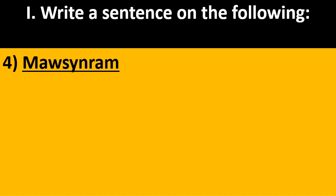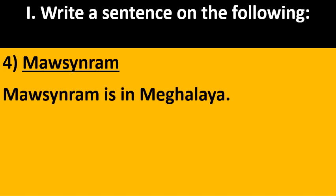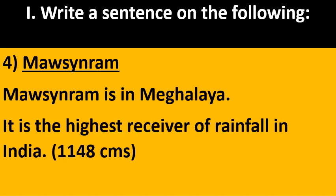Mawsynram. Mawsynram is in Meghalaya. It is the highest receiver of rainfall in India — it receives 1,148 centimeters of rainfall.